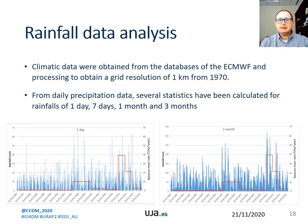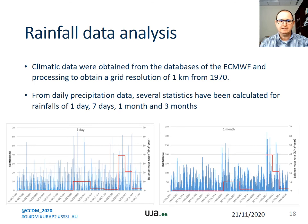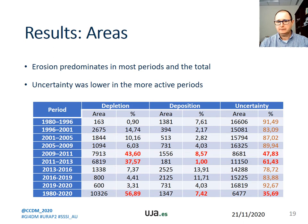Climatic data were obtained from the databases of the European Centre for Medium-Range Weather Forecasts and processed to obtain a grid with a resolution of 1 km from 1970 onward. From daily precipitation data, several statistics have been calculated for rainfall of 1 day, 7 days, 1 month, and 3 months.